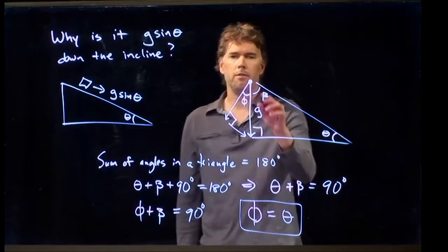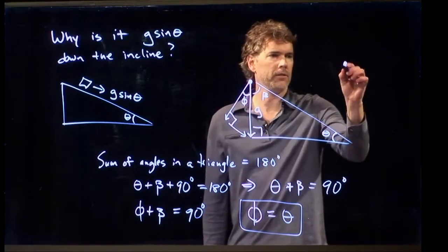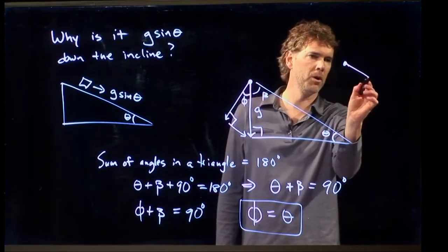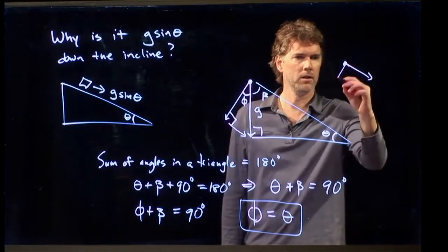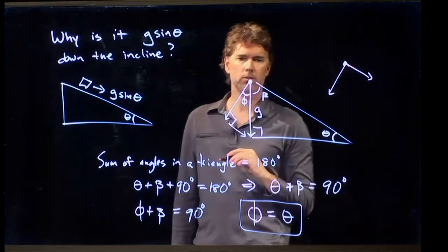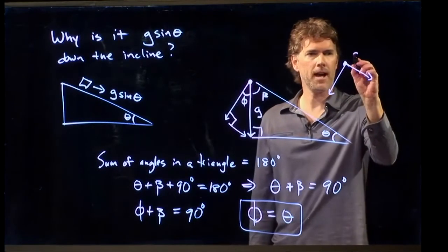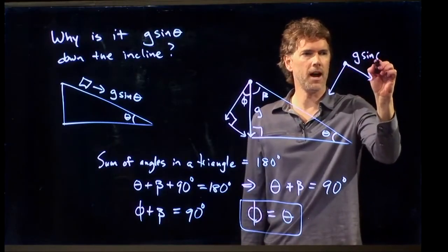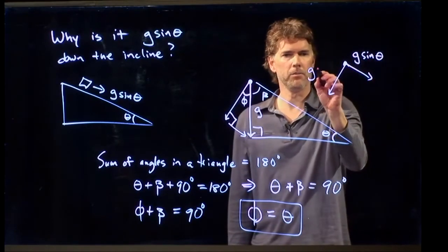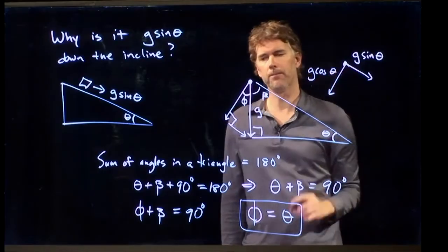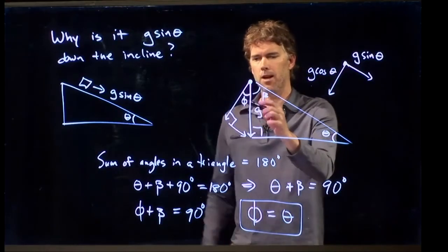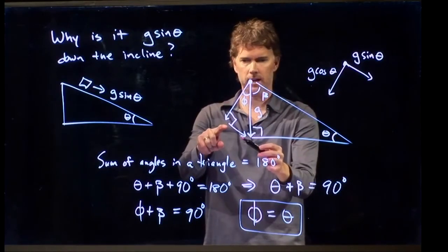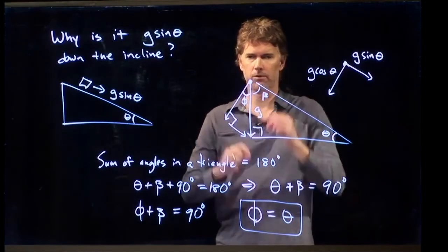So when you draw the box and you say there's some component of gravity in that direction, some component of gravity in that direction, you know that this one has to be g sine of theta, and this one has to be g cosine of theta. Because if I go back to this triangle, this is sine, and this is cosine.